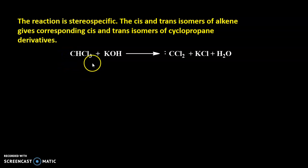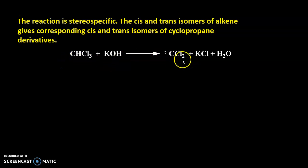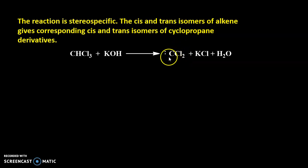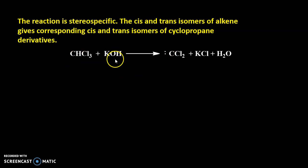This is another way of forming a carbene. This carbon is attached to two chlorine atoms and it has two electrons, so it is a carbene — specifically dichlorocarbene. It is generated when chloroform is treated with potassium hydroxide, resulting in the formation of dichlorocarbene.